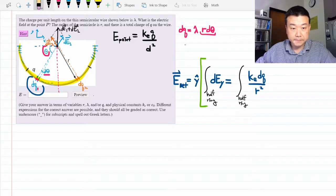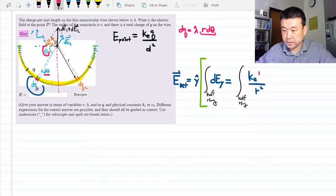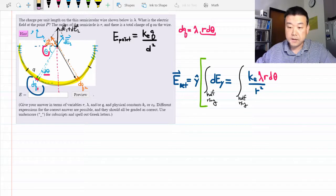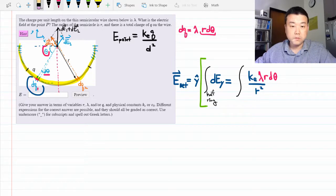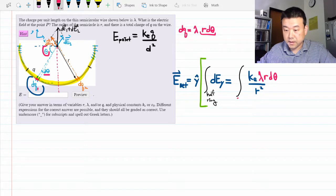So let's substitute that in. So dq is lambda r d theta. And now we can actually specify the limits of integration. We'll say theta goes from zero to complete half circle, pi.